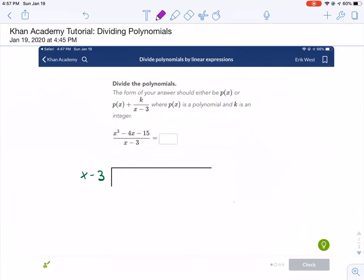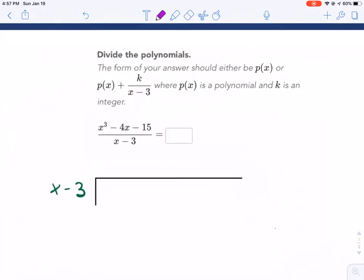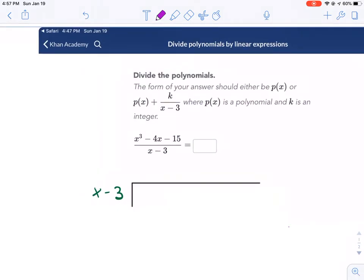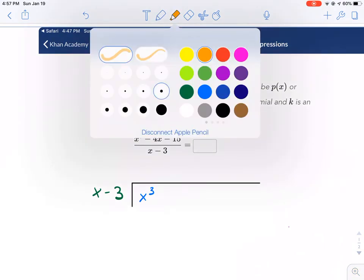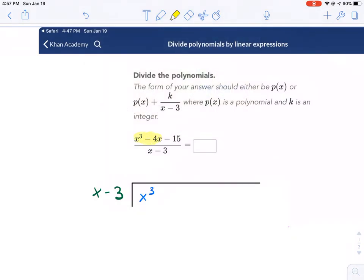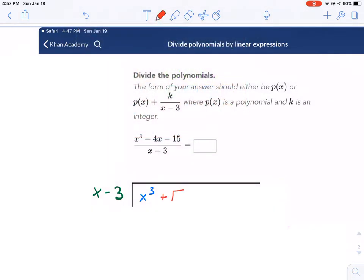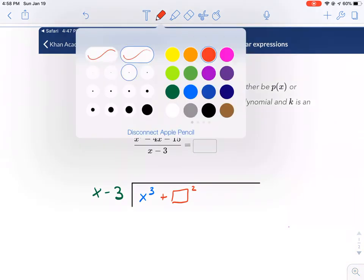For this particular problem we have x³ minus 4x minus 15 divided by x minus 3. We're going to start by filling in the divisor. Inside the divide sign we have x to the third. Now this is the part you need to be mindful of - you'll notice here that there is no x². It's missing. We still need to account for that and write that in. I'm going to show you by having this little box here and writing x². We need an x³, we need an x², we need x to the first, and we need x to the zero.